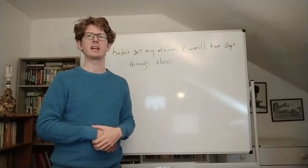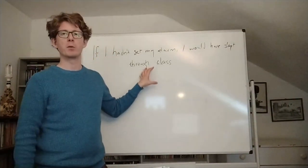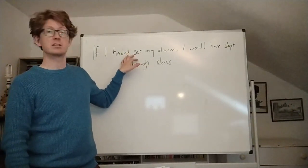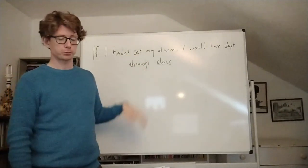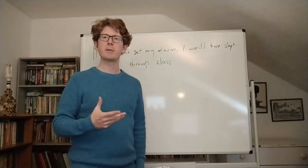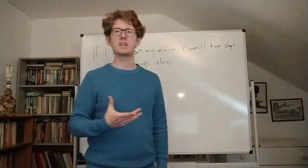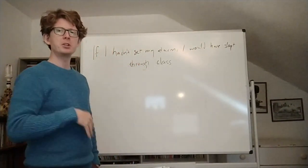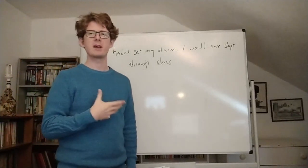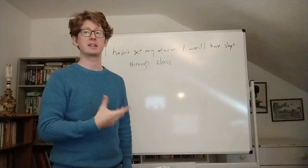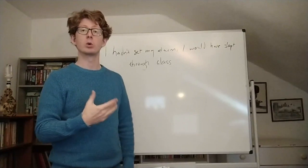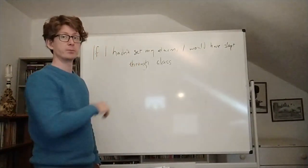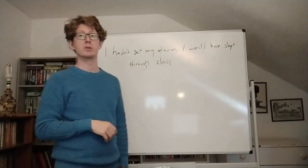Rather, what we seem to be saying is something about a more restricted class of worlds — a more restricted class of worlds where I don't set my alarm. One way to think about it is we're looking for the worlds that make it true that I don't set my alarm but make the smallest number of changes to do so. Another way of putting it is we're looking to the most similar worlds where I hadn't set my alarm and seeing whether the consequent is true there.